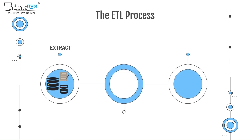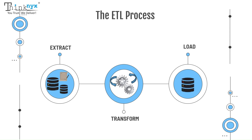We connect to data sources like CSV files, databases, or even real-time streams. Using Spark's built-in functions, we clean, filter, and enrich the data and transform it. Finally, we load the processed data into storage systems like Parquet files — which store structured data in column format — HDFS, the Hadoop Distributed File System, or even cloud storage.